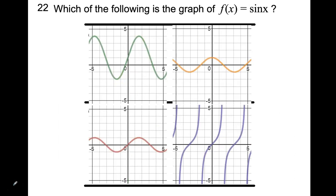For the graph of f of x equals sine of x, option C is the correct answer. Keep in mind that the sine function crosses through the origin. Make sure to draw the graph properly and copy it into your notes.